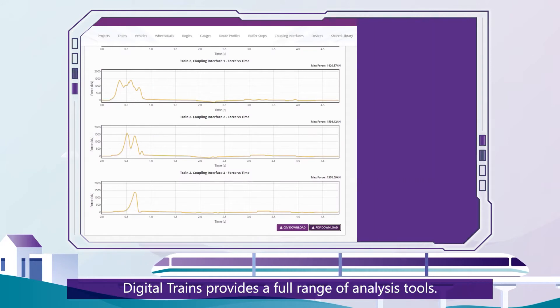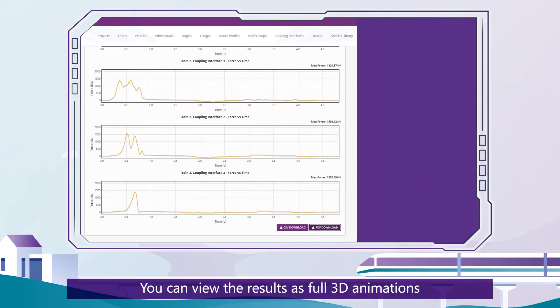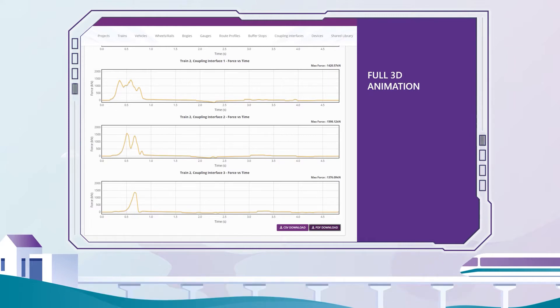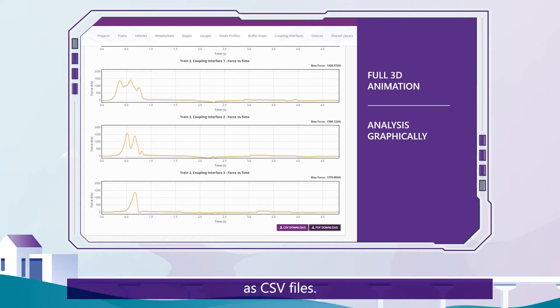Digital Trains provides a full range of analysis tools. You can view results as full 3D animations, or analyze the results graphically and download the data as CSV files.